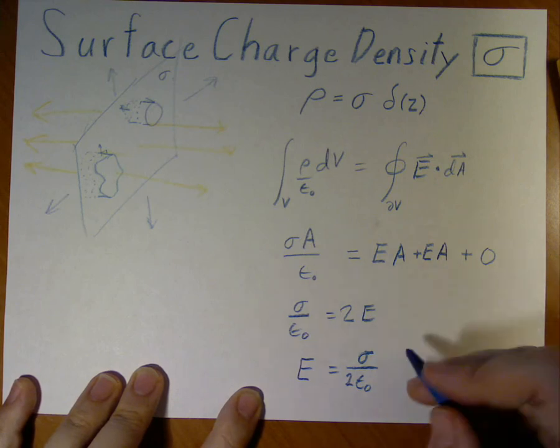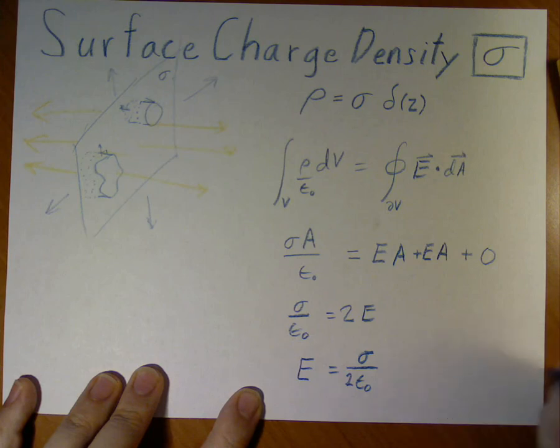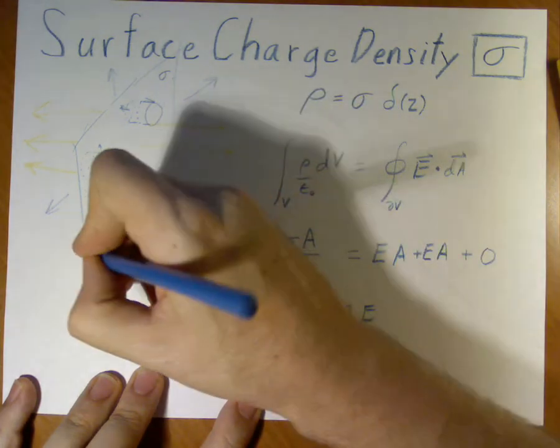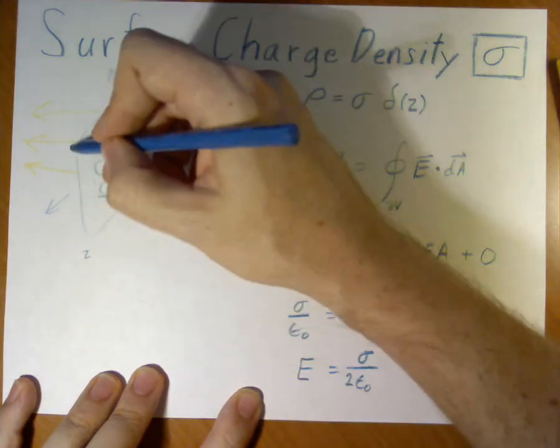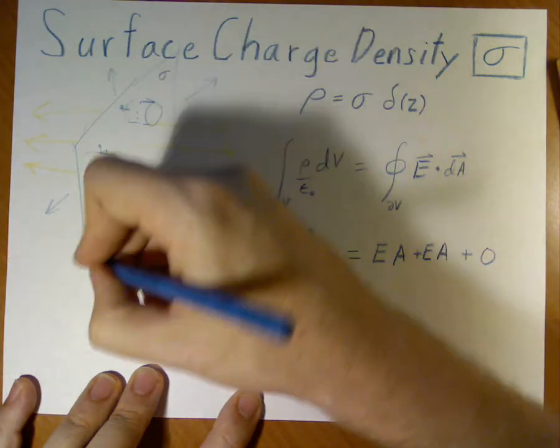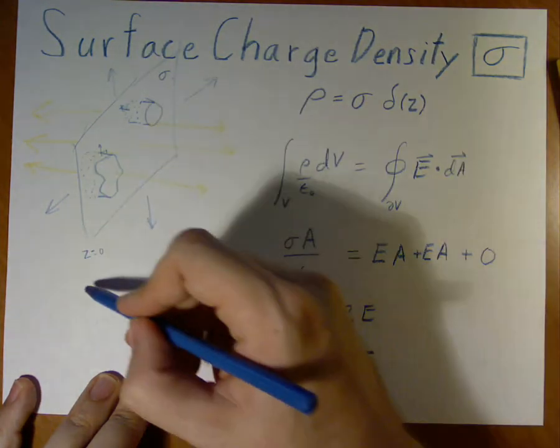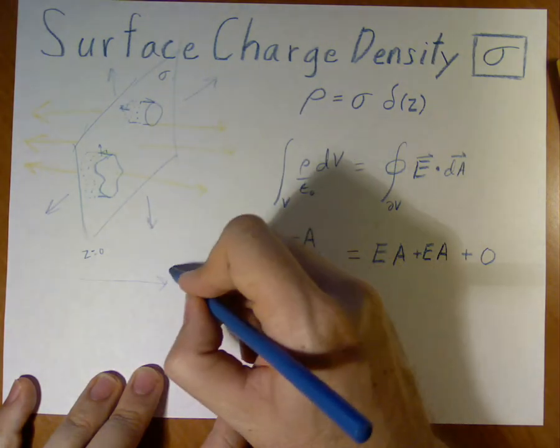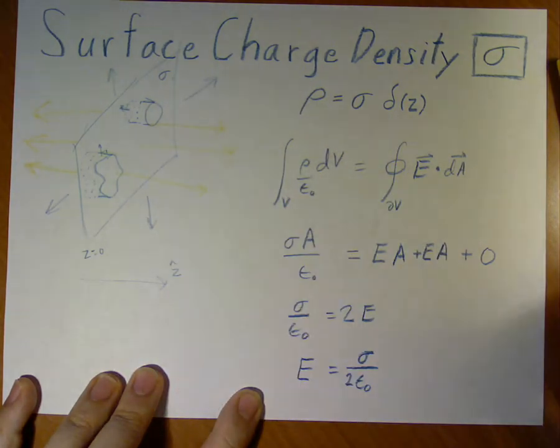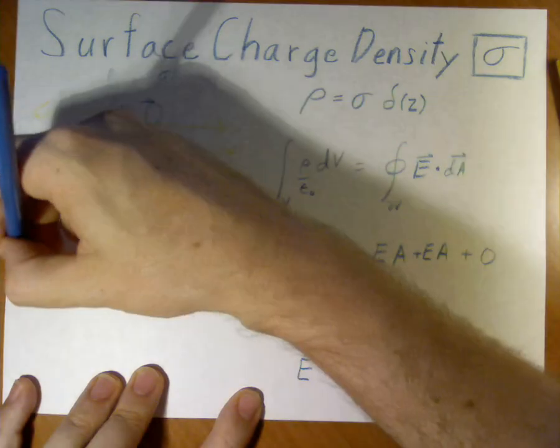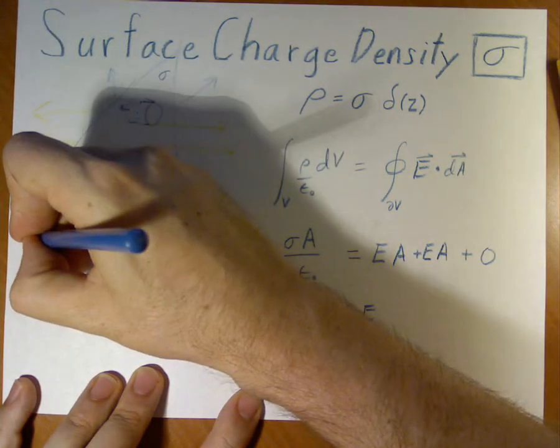What direction does it point? Well, it points in the... since our boundary right here, our surface where our charge is, is z equals zero, that must mean that this direction is the z-hat direction. And likewise, this is the negative z-hat direction.